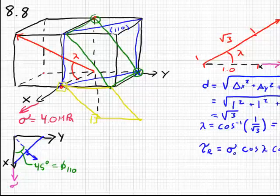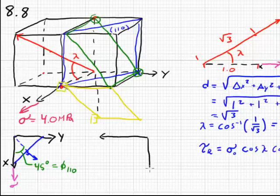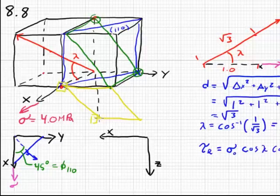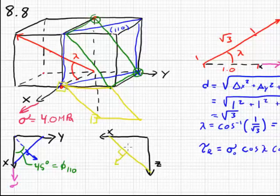Our next plane is the 1-0-1 plane and that is perpendicular to the x-z plane. Here's our x-z plane and it's the yellow plane that we're considering here. The yellow plane comes from the x-intercept down to the z-intercept. And its normal vector is likewise at 45 degrees to the direction of stress.